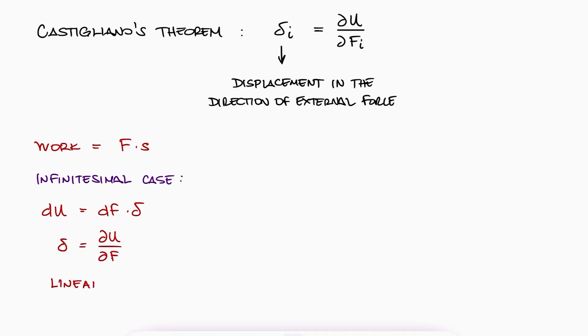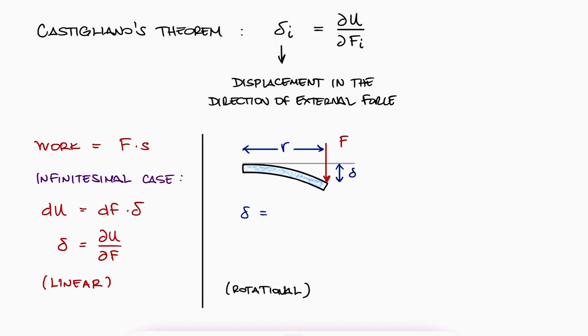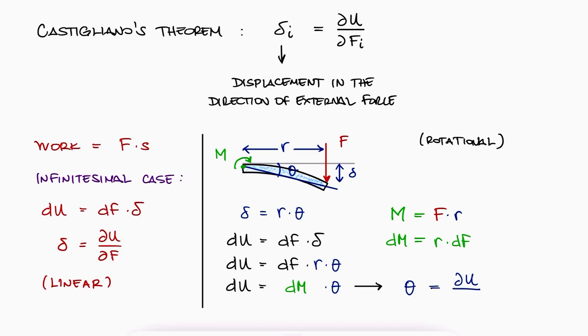The theorem is also defined for calculating rotational displacements. For example, in the displacement of a point somewhere along a deflected beam, the displacement at that location can be calculated as an arc that has a length equal to r times theta. Since the force times the distance r is equal to the moment caused by that force, an infinitesimal energy du equal to df times delta can be worked with by substituting delta by r theta and r df by a dm to find an expression for the angle of deformation theta equal to partial of u with respect to m.